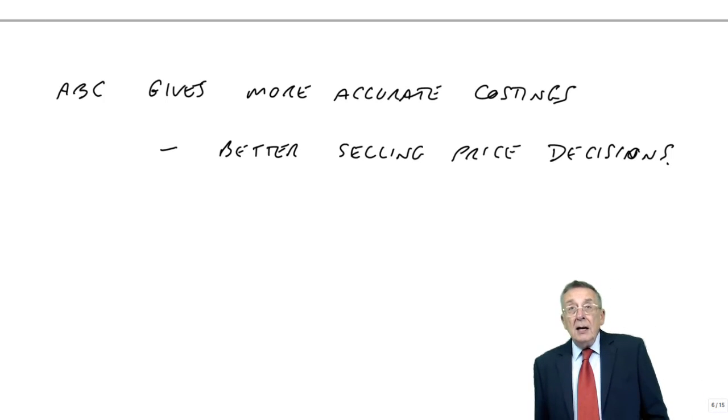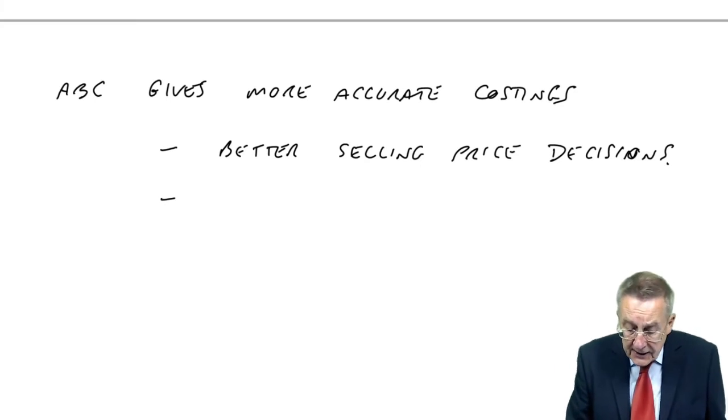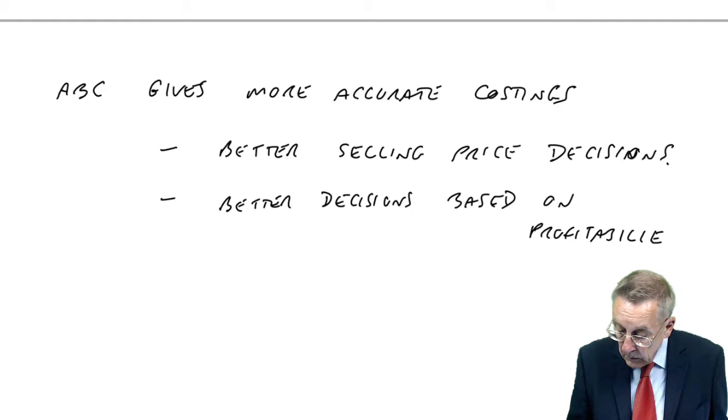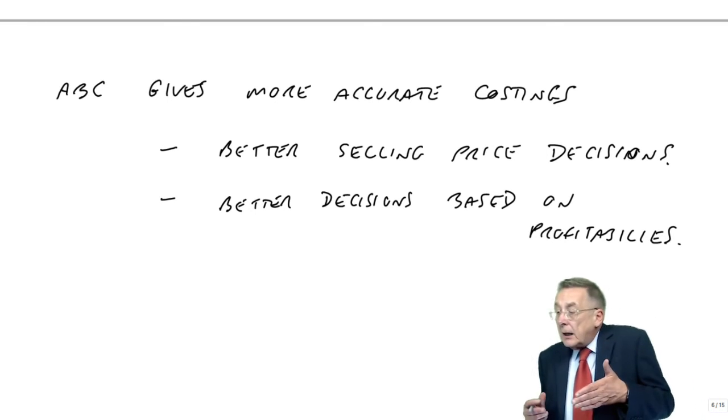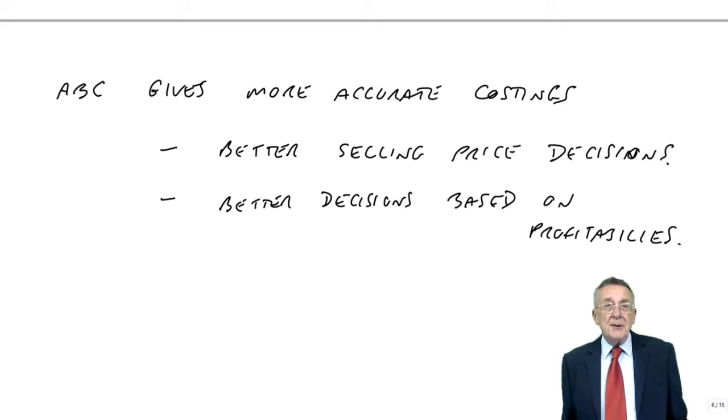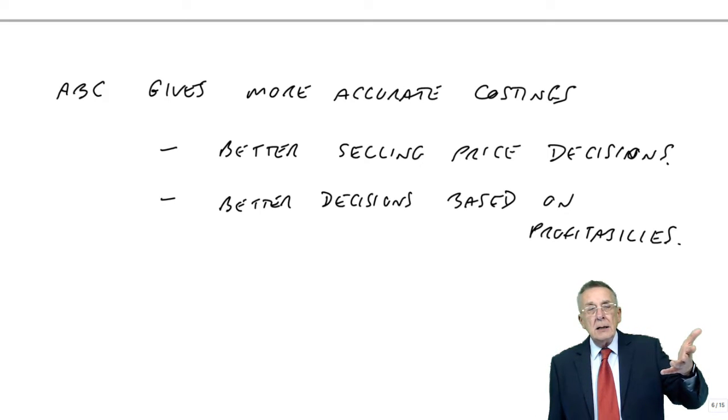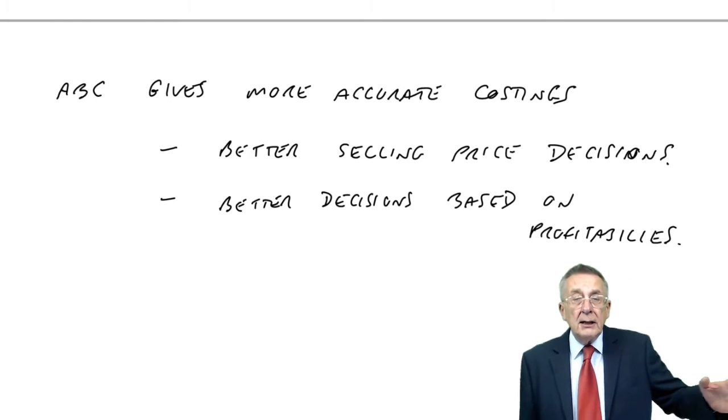And also, other decision-making, not just selling price, better decisions based on profitability. What I'm getting at there, is suppose I were to tell you that these three products can't be sold for more than 20. We've got competitors, they're selling at 20, if we sell at more, we're not going to sell any.